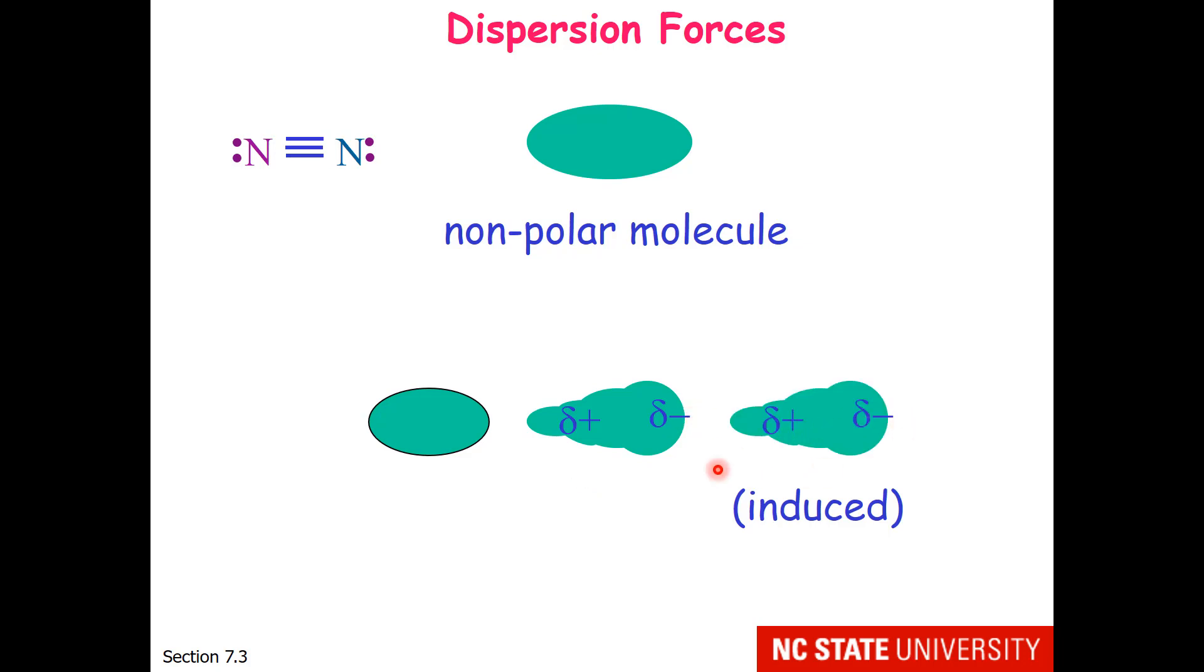If one molecule has a dipole, it can induce dipoles in molecules that are within the vicinity. So the next molecule over, the electrons notice there's a lot of electrons here and say, like charges repel. I should go over to the right side.